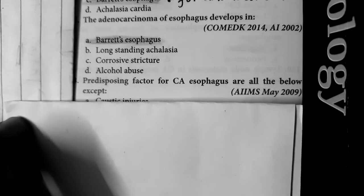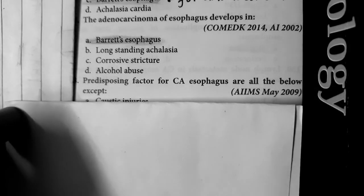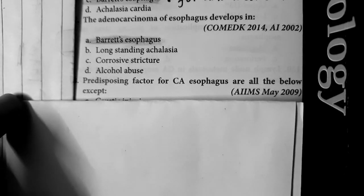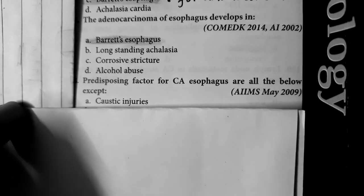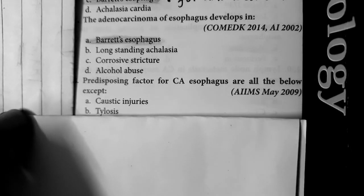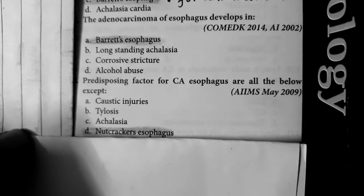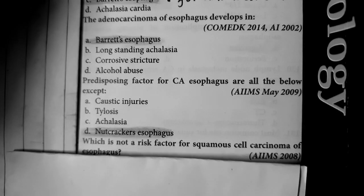Question number 8: Predisposing factors for carcinoma esophagus are all below except nutcracker esophagus. Caustic injuries predispose to squamous cell carcinoma. Tylosis predisposes to squamous cell carcinoma. Achalasia cardia also predisposes to squamous cell carcinoma. Nutcracker esophagus has no association with carcinoma esophagus.